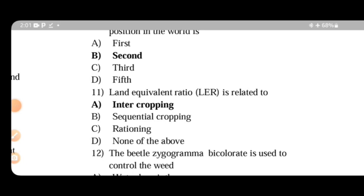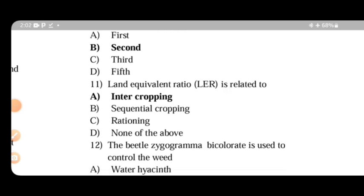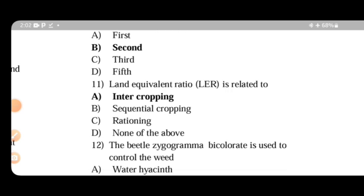Land Equivalent Ratio is related to intercropping. It's the land the sole crop plus intercrop would occupy. The LER for intercropping more than one is beneficial. The formula is yield of intercropping divided by yield of sole crop.